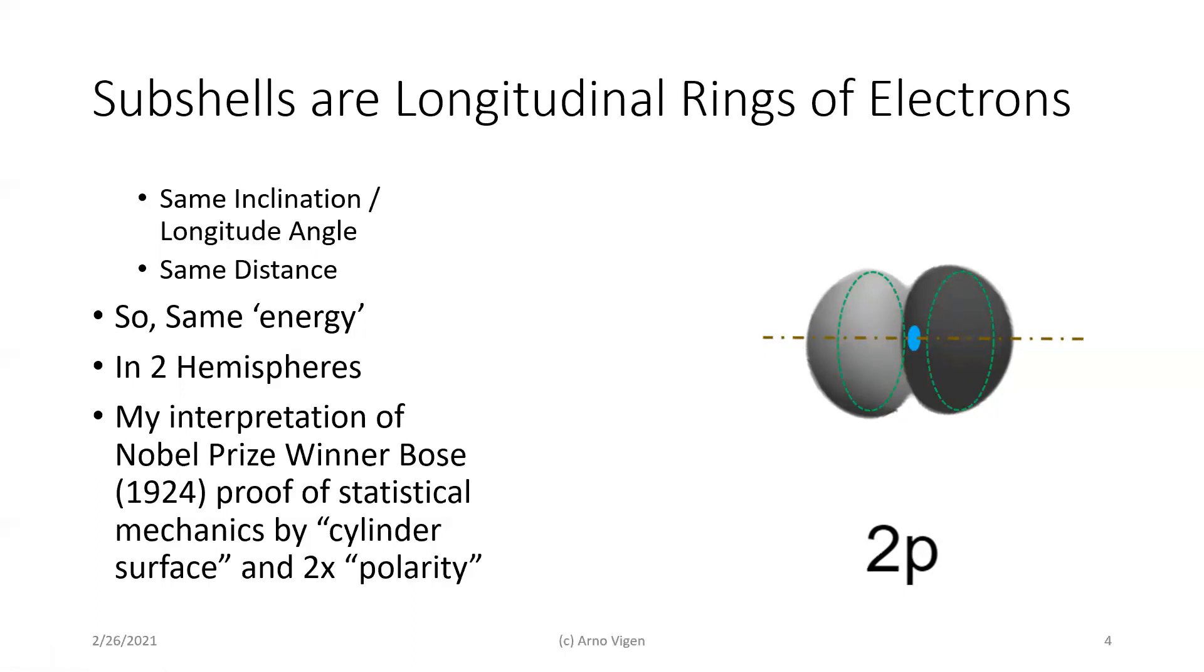Now, the thing about this model is that you get the same inclination, that is a longitudinal angle. It's like a longitude on a globe at the same distance, and thereby, all the electrons, if they settle around here, have the same energy. That's what makes them a longitudinal ring of electrons.